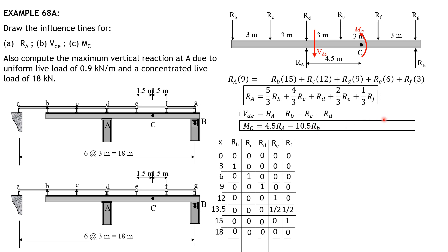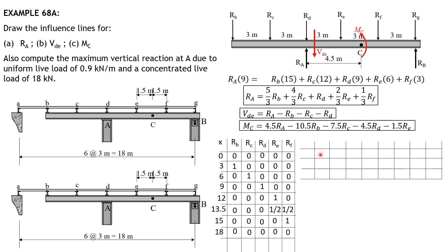Let's now plot the coordinates for RA, shear in panel DE, and moment at C. When x is 0, all reactions RB through RF are zero, so RA is 0, shear in panel DE is 0, and MC is also 0. When x is 3, only RB is 1 and the rest are 0, so RA equals five-thirds times 1, giving RA equals five-thirds.